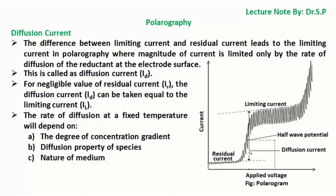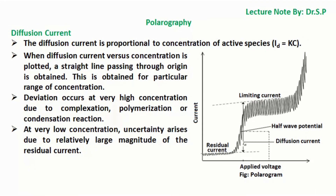Diffusion current: The difference between limiting current and residual current leads to the diffusion current in polarography, where the magnitude of current is limited only by the rate of diffusion of the reductant at the electrode surface. This is called diffusion current ID. For negligible residual current IR, diffusion current ID can be taken equal to limiting current IL. The rate of diffusion at a fixed temperature depends on: the degree of concentration gradient, the diffusion property of the species, and the nature of the medium.